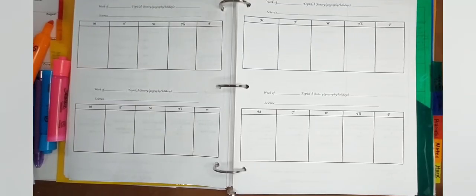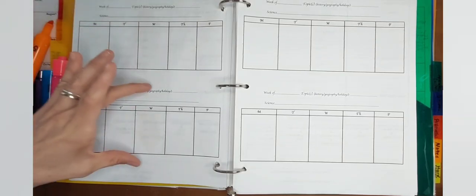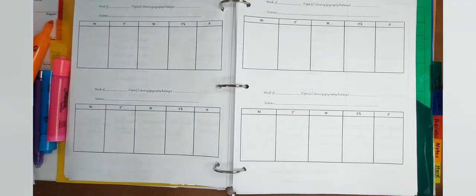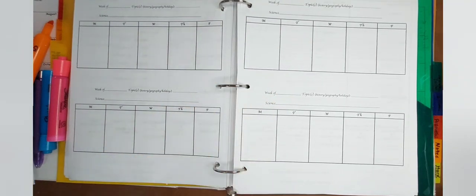This is the weekly lesson planner section. So we have a section for week one, week two, week three, week four. Of course, there's a fifth week, you can go on to the next page. So I'm going to go ahead and set that up.